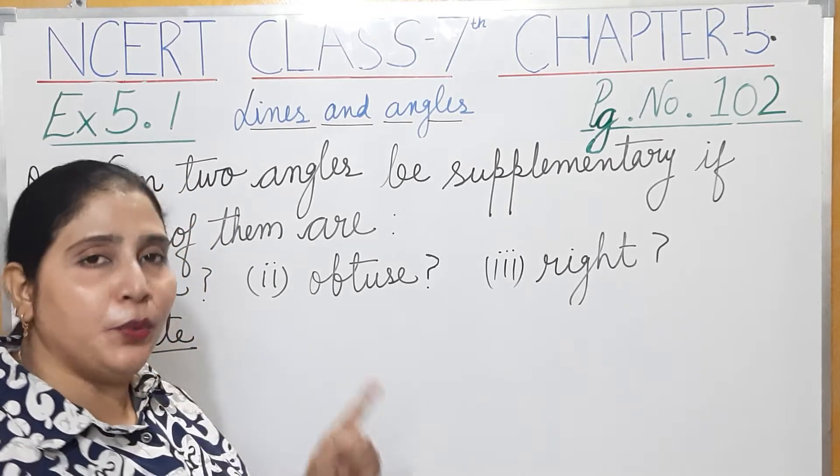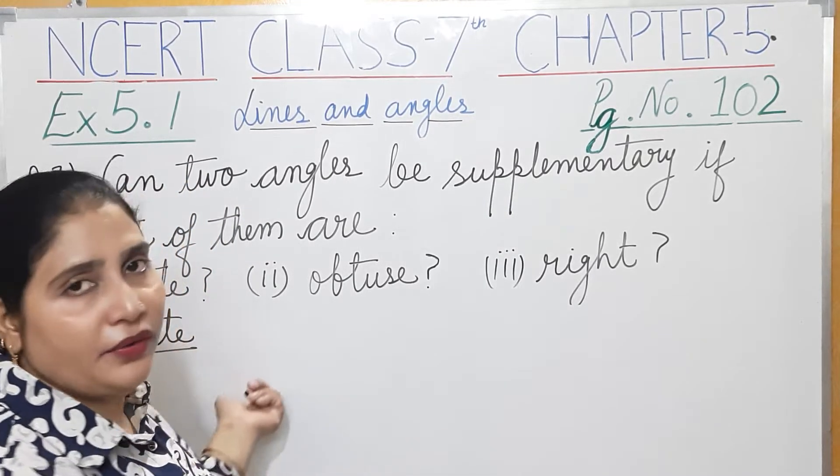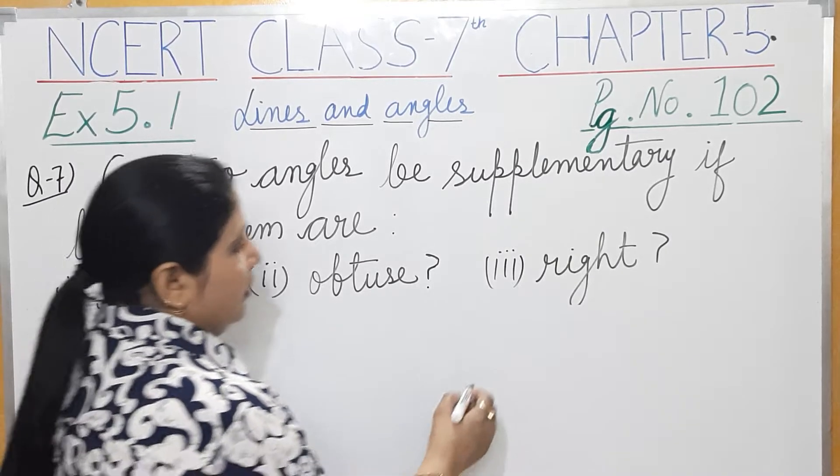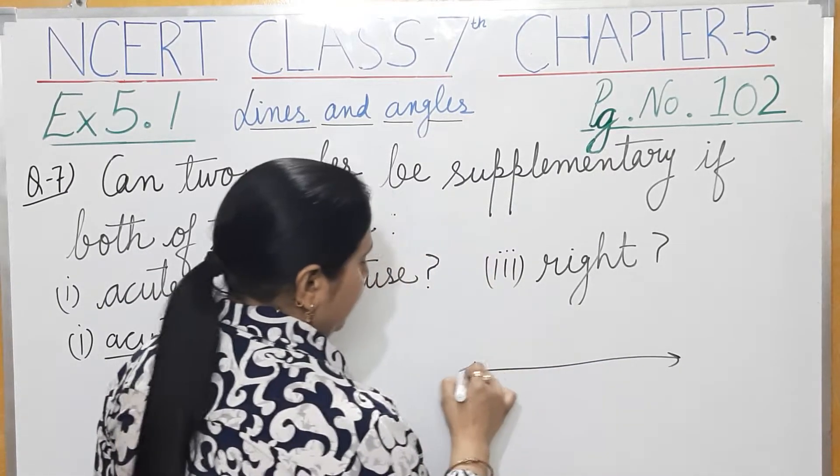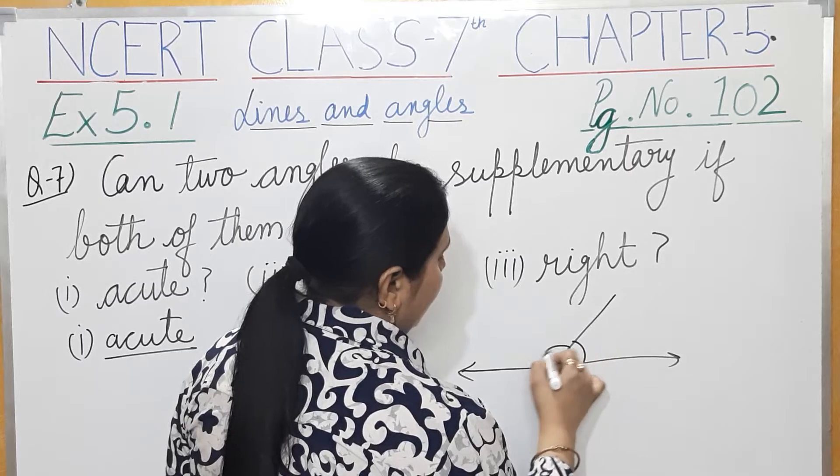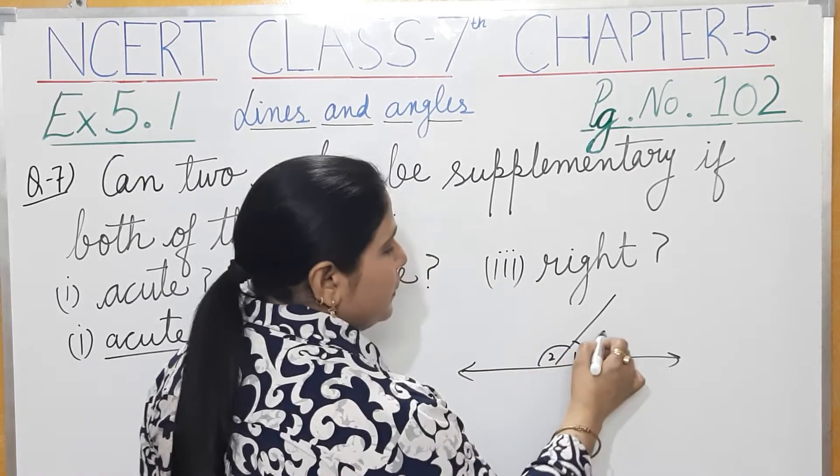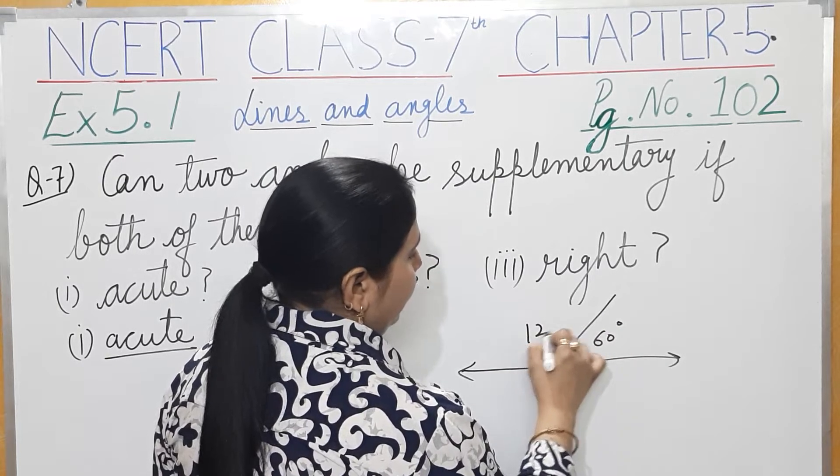So if we take two angles, what are supplementary angles? Let's suppose this is angle 1 and this is angle 2. This is 60 degrees, this is 120 degrees.